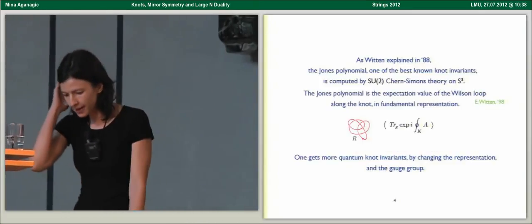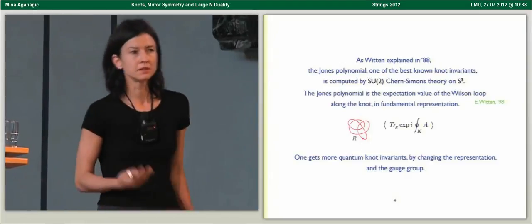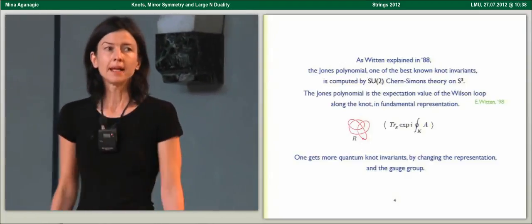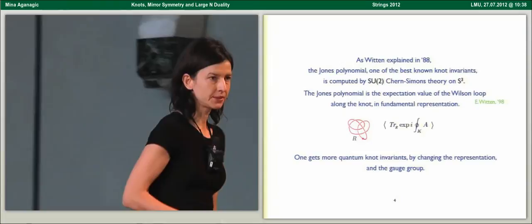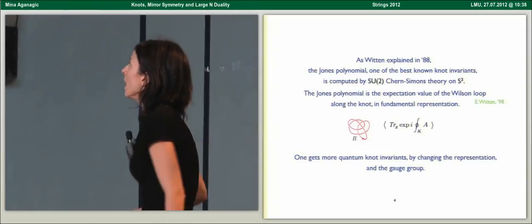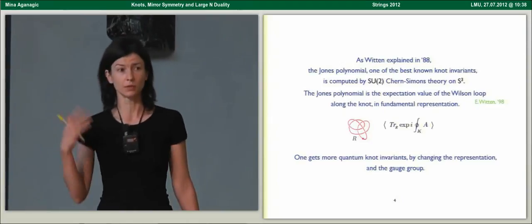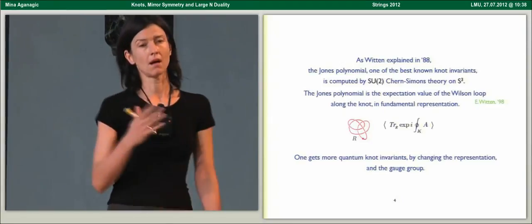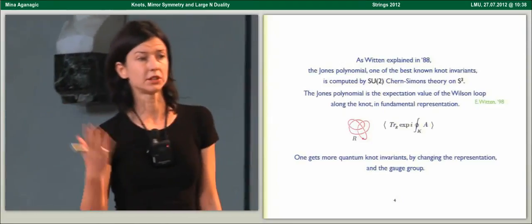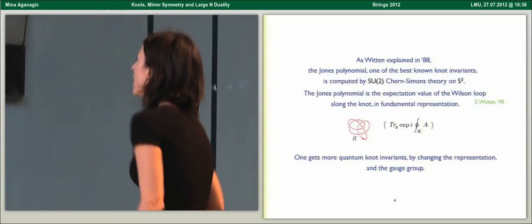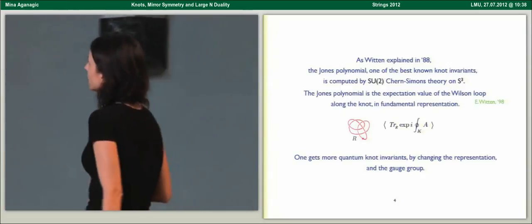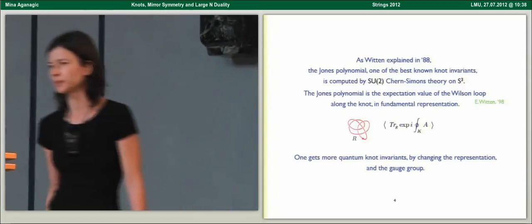As Witten explained in 1988, one of the best-known knot invariants, the Jones polynomial, is computed by SU(2) Chern-Simons theory on S3. The Jones polynomial is the expectation value of the Wilson loop along the knot in fundamental representation of the gauge group.